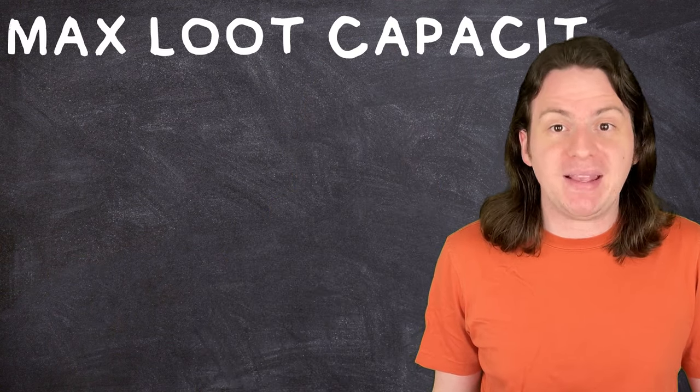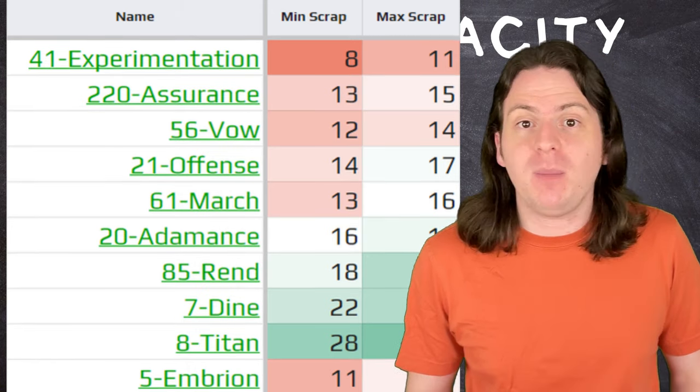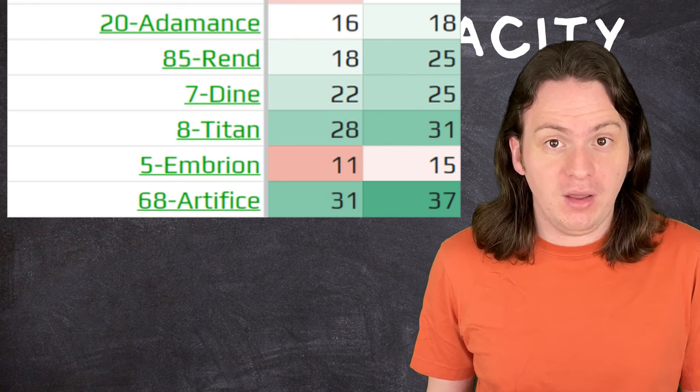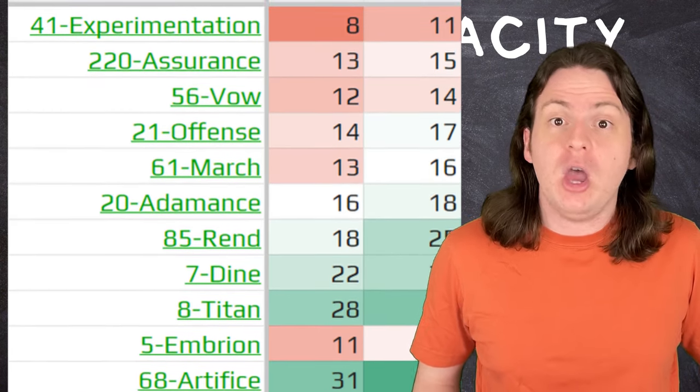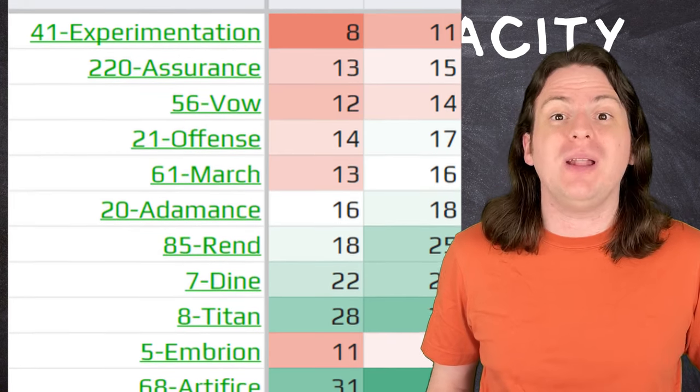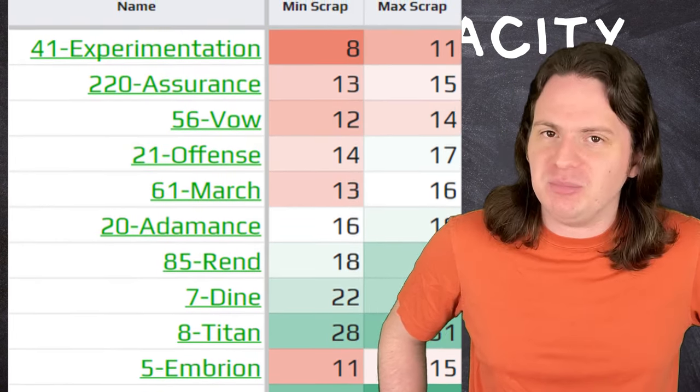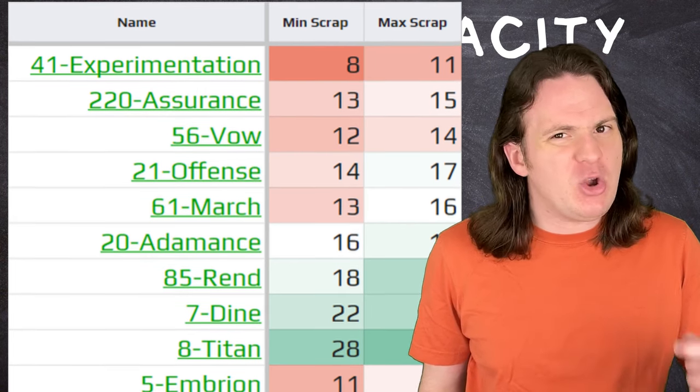That brings us to our next criterion, the max loot capacity. Each moon has a set limit for the total number of items that it can spawn. Experimentation can spawn 8 to 11, while the new artifice can spawn up to 37. For less experienced crews, this limit might not matter all too much, but a well-practiced crew could pretty easily clean out all 11 items on experimentation with time to spare. And, as every good employee knows, time spared is time wasted. In these cases, having more loot available is incredibly important.